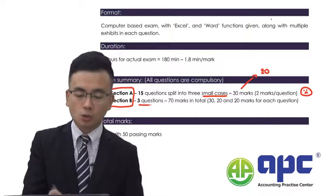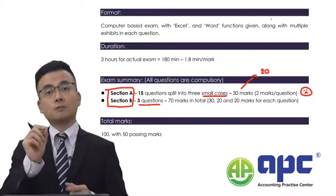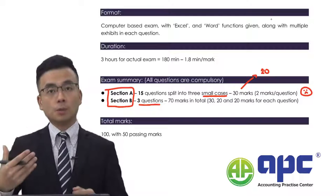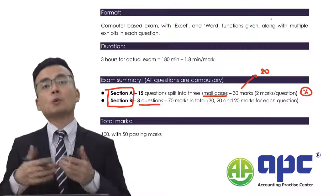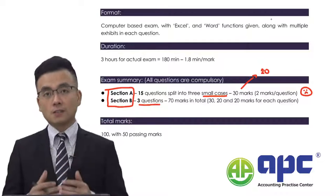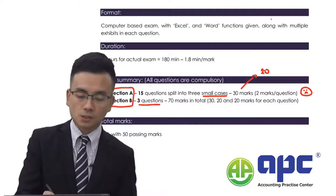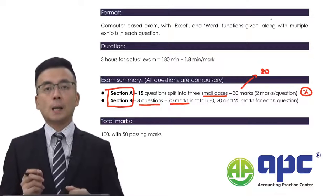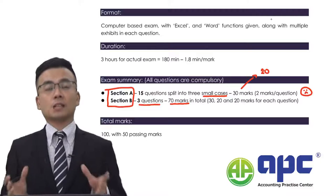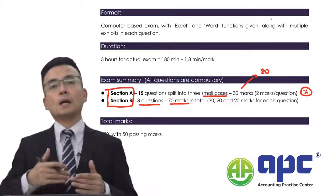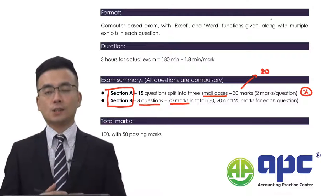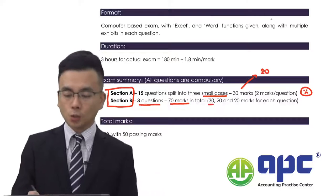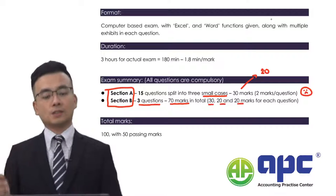For Section B, there will be three substantial questions. You are given the narratives and several requirements, and for each sentence that you input in the answer box, that will be worth one mark. So theoretically, with 70 marks in total, you are expected to write 70 sentences, though this may differ from case to case. The three questions carry 30 marks for the first one, and 20 and 20 marks for the second and final ones.